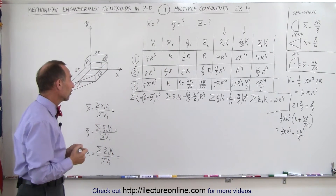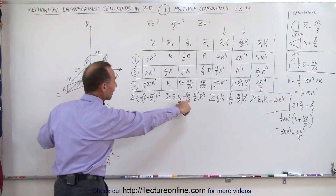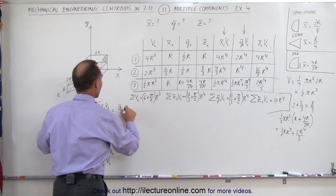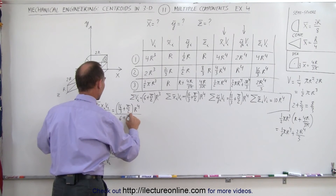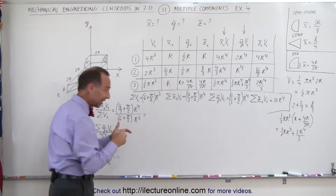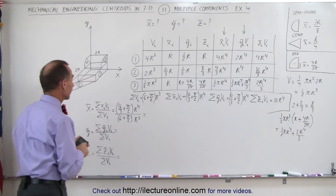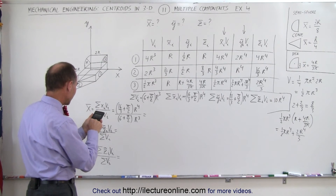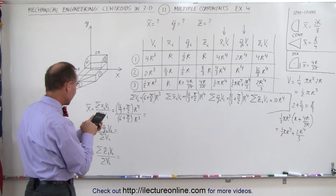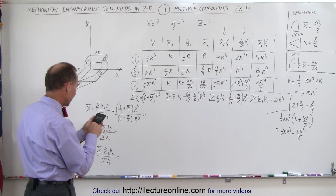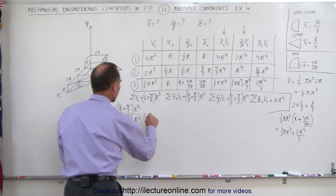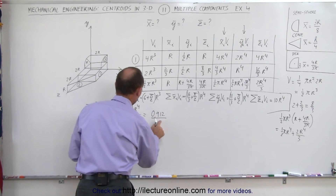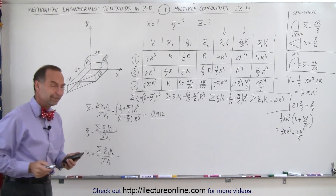Now we're ready to find the x, y, and z coordinates of the centroid. For x̄: we take (16/3 + π/2)r⁴ divided by the total volume (6 + π/2)r³. Using a calculator: (π/2 + 16/3) ÷ (π/2 + 6) = 0.912, so x̄ = 0.912r.